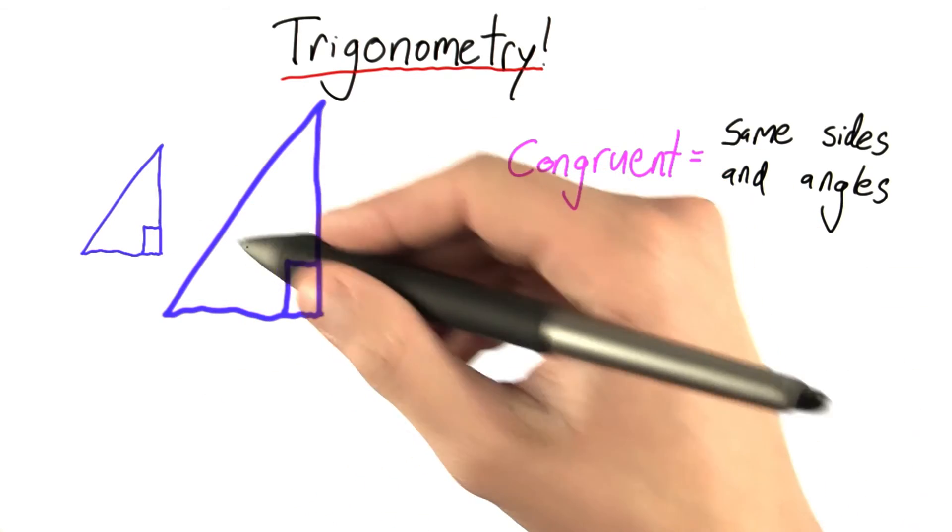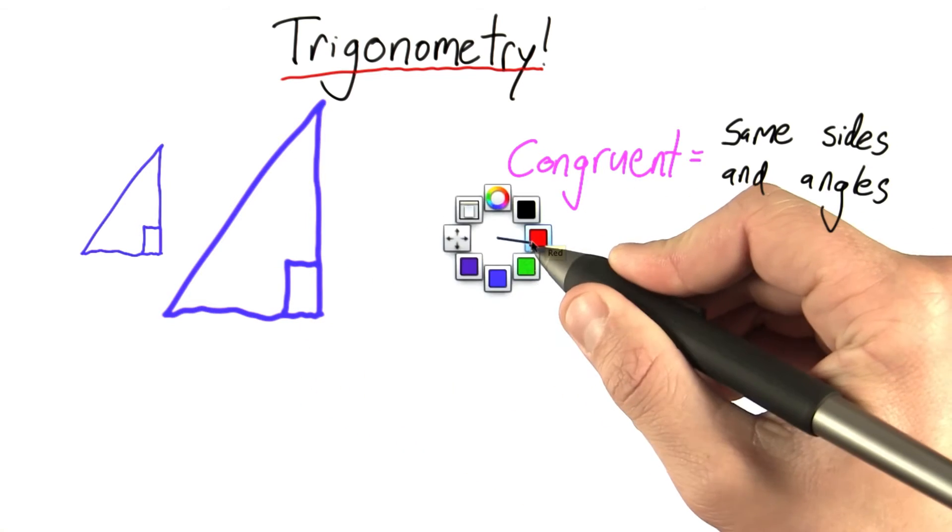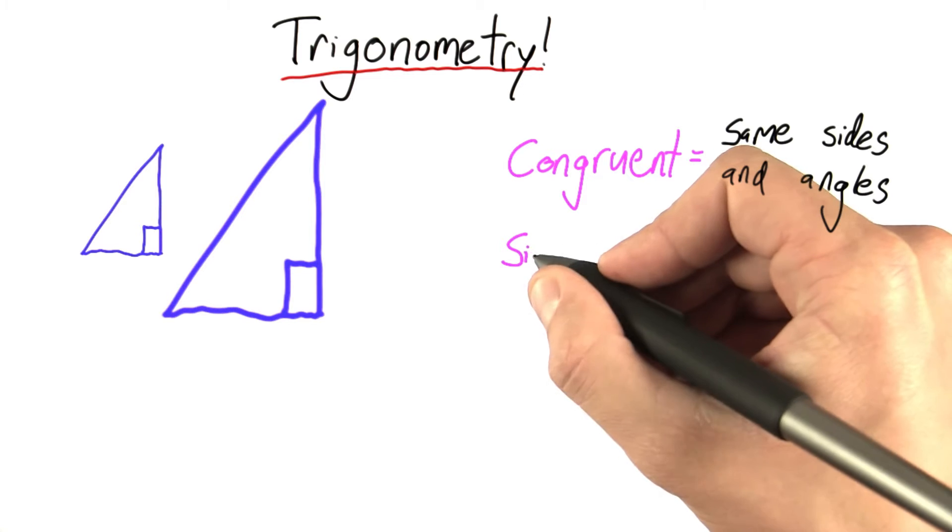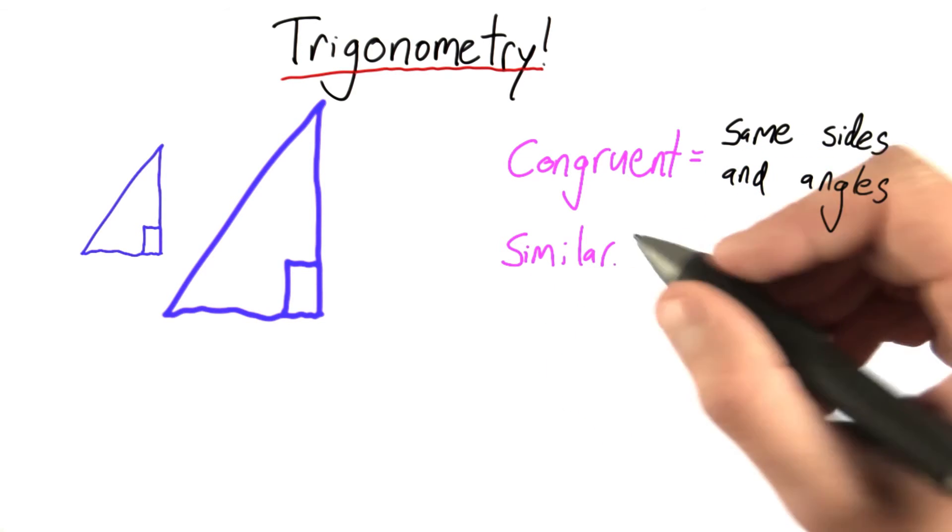So, let's come up with a name to describe two triangles that are similar in such a way. In fact, let's call them similar. These are similar triangles, and they're so vital to doing physics.